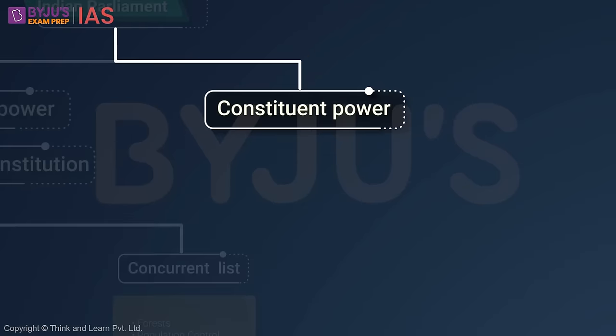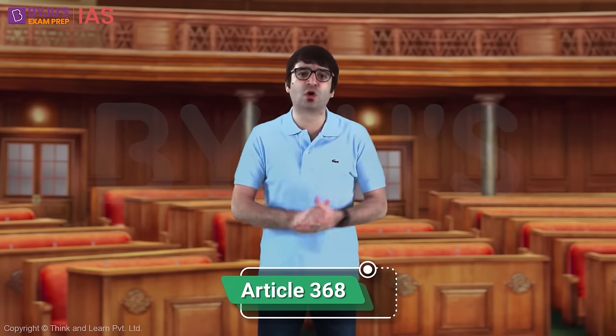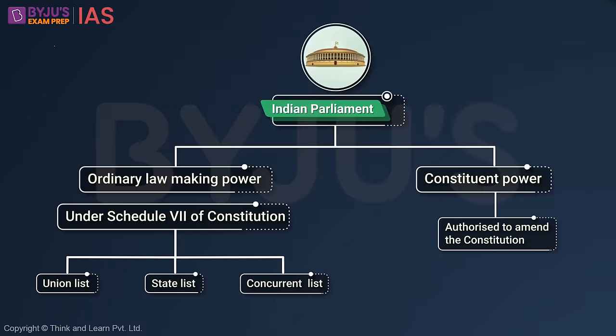Indian Parliament also has its constituent power, which means it is authorized to amend the Constitution. In order to make changes to the Constitution, there is no need for a new constituent assembly. The Indian Parliament will use its constituent power to amend the Constitution under Article 368. However, this is subject to the doctrine of basic structure — Parliament can make any changes to the Constitution without altering the basic structure.